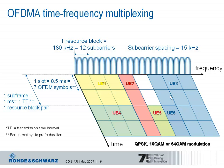The subcarrier spacing is 15 kHz, and each one millisecond these assignments can change. The time domain in LTE is organized in subframes of each one millisecond, and one subframe corresponds to a transmission time interval. So every one millisecond the base station can change the scheduling decision, and the distribution of resource blocks among users can change, or it can also be maintained, as in the example of UE2.